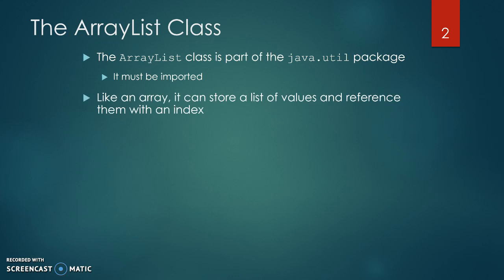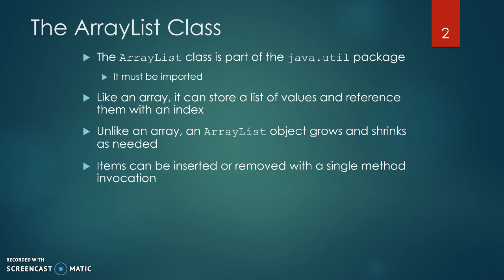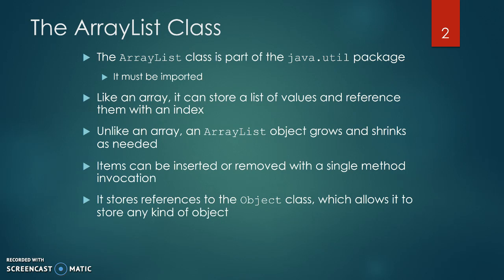Like an array, an ArrayList can store a list of values and reference them with an index. Unlike an array, an ArrayList object grows and shrinks as needed. Items can be inserted or removed with a single method invocation. It stores references to the object class, which allows it to store any kind of object.